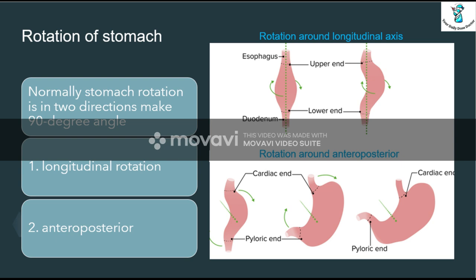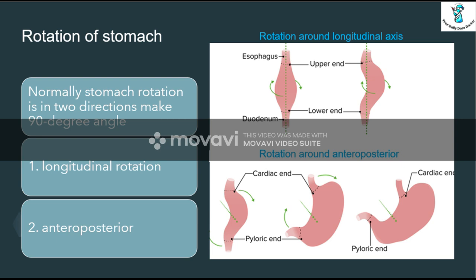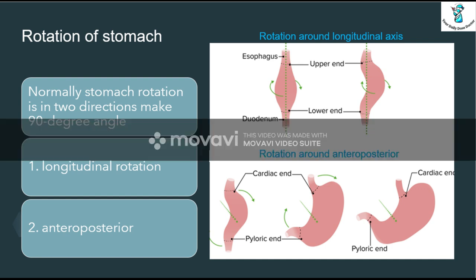The position of the stomach is basically based on the rotation of the stomach. The stomach rotates at a 90-degree angle clockwise, and it has two types of rotations: one is called longitudinal rotation and the second is called posterior rotation. In the longitudinal axis, the stomach rotates, and the vagus nerve attached to it also rotates — the left side rotates towards the anterior side and the right side rotates toward the posterior side.